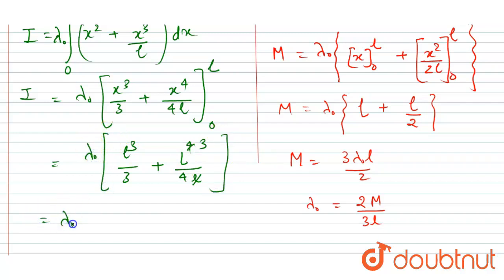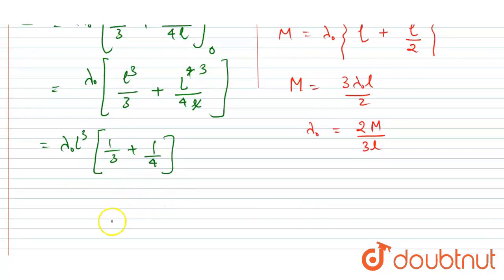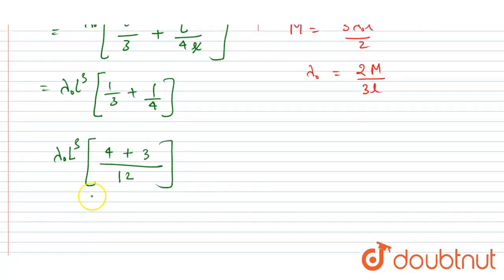So if I take this L cube common, then in bracket I will get 1 by 3 plus 1 by 4. Now you could take the LCM. So I will write 12 here, I will write 4 plus 3 times lambda naught L cube. So you will get 7 by 12 lambda naught L cube equals I.